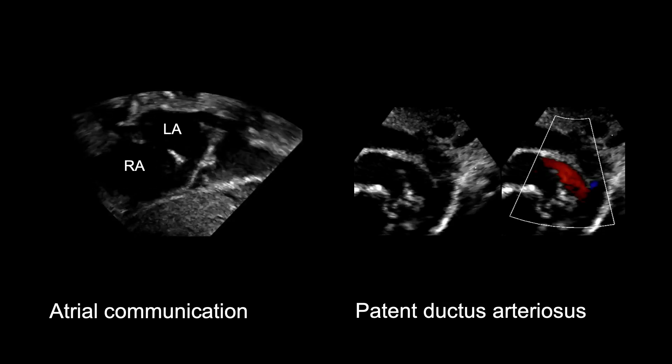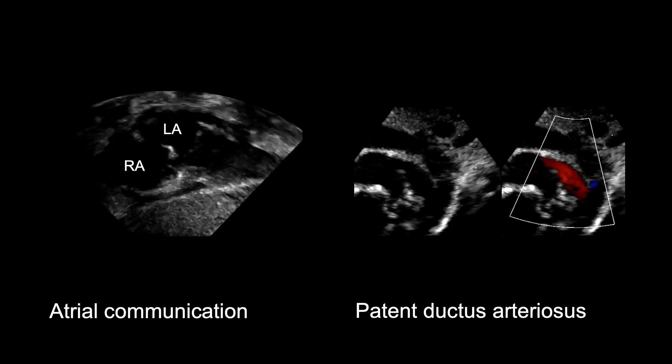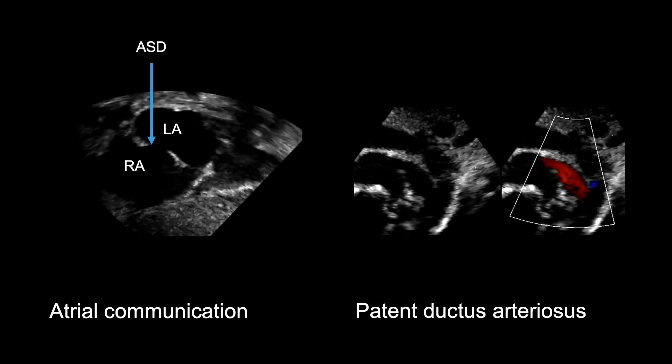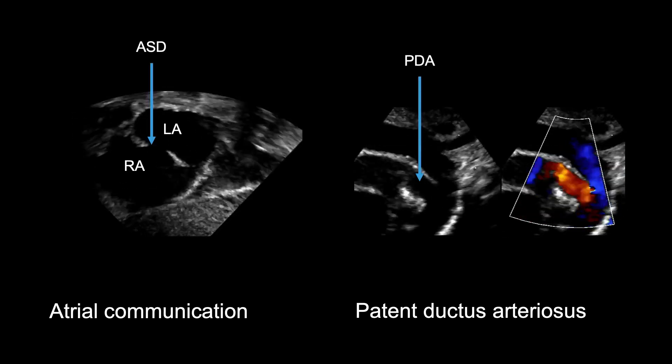If a balloon atrial septostomy or prostaglandin was required to improve oxygenation, it is very likely there will be a large atrial communication and a large patent ductus arteriosus. It is also common to see associated lesions with TGA, such as a ventricular septal defect or valve stenosis, or less commonly abnormalities of systemic or pulmonary veins, so a full pre-surgical echo is essential. If additional defects are found, be sure to inform the cardiologist and surgeon as they will likely be addressed at the time of the complete repair and may also affect the surgical approach taken.